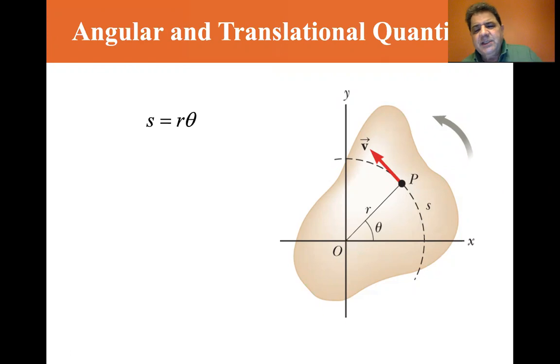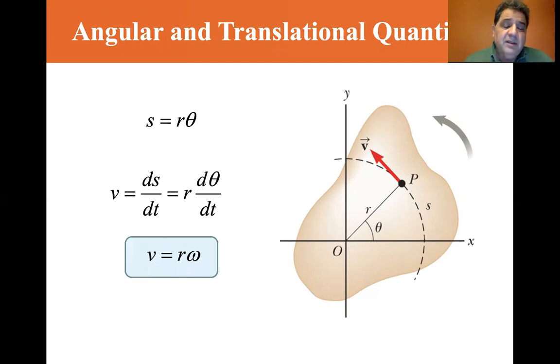So s equals r theta. Velocity is the time rate of change of s. And so s being r theta, ds dt, the time rate of change of s is the time rate of change of theta. Because r is not going to change, r is the same radius going around. So v equals ds dt equals r d theta dt. So v equals r omega. The time rate of change of position, d theta dt equals angular velocity, r omega.